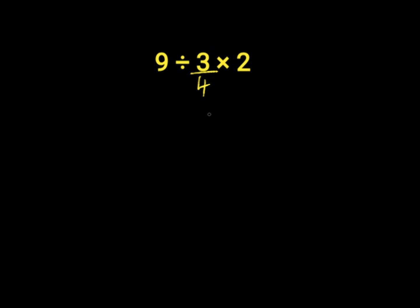3 times 2 will give us 6. Then we have 6 over 4. Then put down our 9 here. 6 divided by 4 will give us 1.5. Then we have 9 divided by 1.5. 9 divided by 1.5 will give us 6.